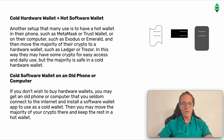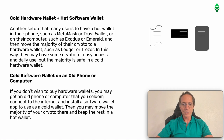Cold Hardware Wallet plus Hot Software Wallet. Another setup that many use is to have a Hot Wallet in their phone such as MetaMask or Trust Wallet, or on their computers such as Exodus or Emerald, and then move the majority of their crypto to a hardware wallet such as Ledger or Trezor. In this case, they may have some crypto for easy access and daily use, but the majority is safe in a Cold Hardware Wallet.